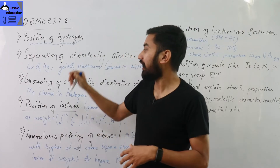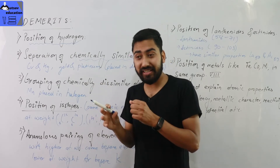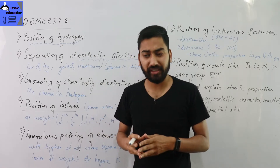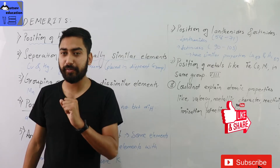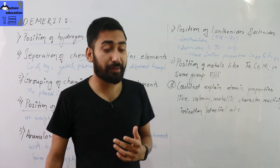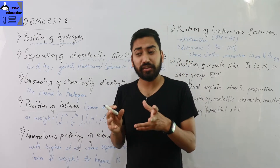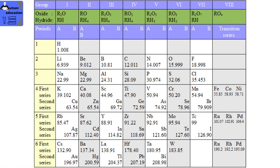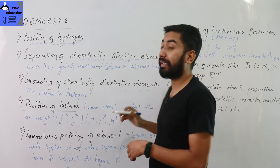Another demerit is the separation of chemically similar elements. Because elements were arranged in increasing order of atomic mass, some chemically similar elements like copper, gold, mercury, and platinum were placed in different groups, even though they share similar chemical properties. This separation of chemically similar elements into different groups is a demerit.